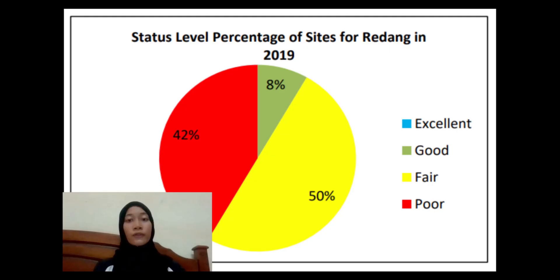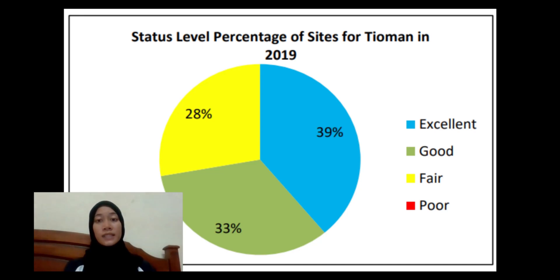A total of 12 coral reef sites were surveyed in Redang, where 50% of the sites were in fair condition, 8% were in good condition, and the remaining 42% in poor condition. A total of 18 coral reef sites were surveyed in Tioman and 39% of the reef were in excellent condition, 33% were in good condition, while the remaining 28% were in fair condition.